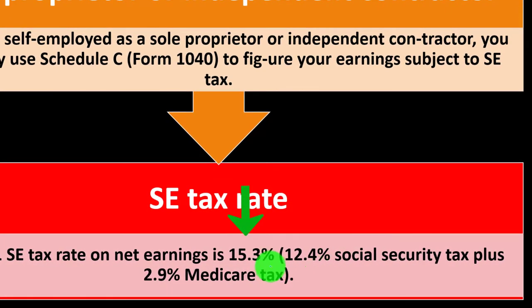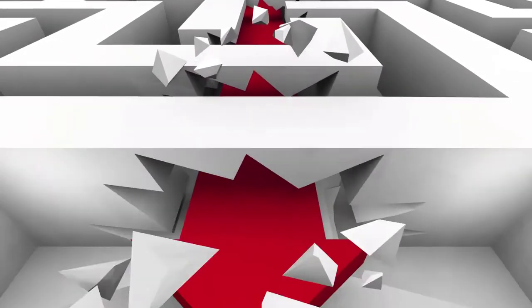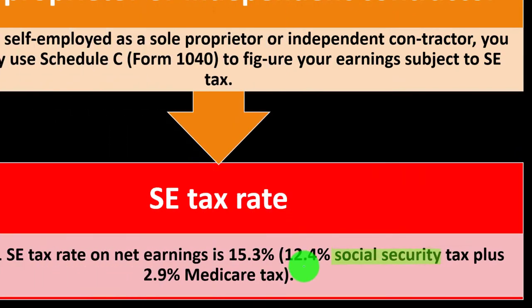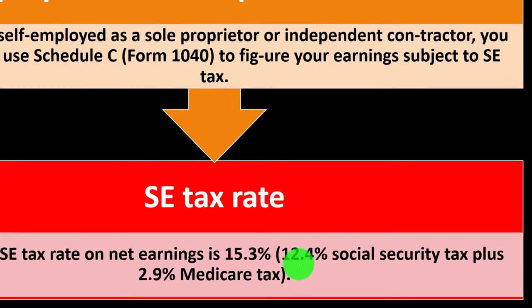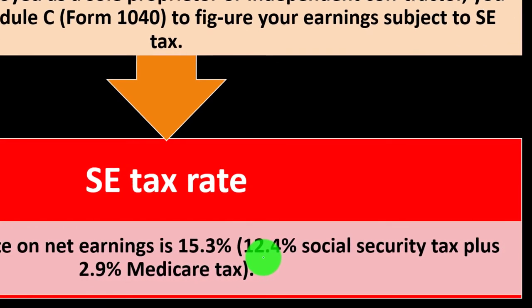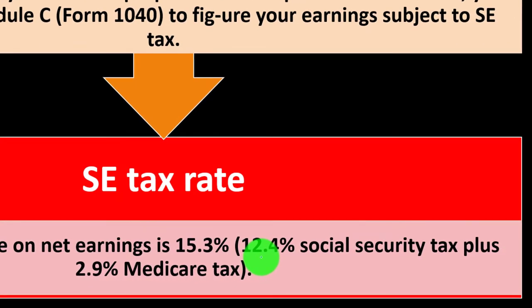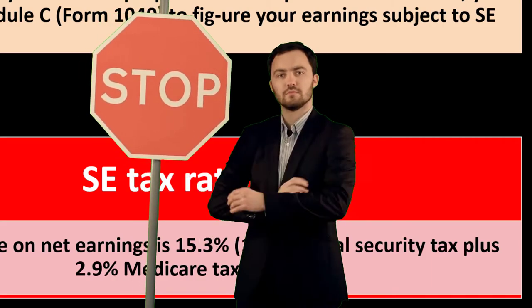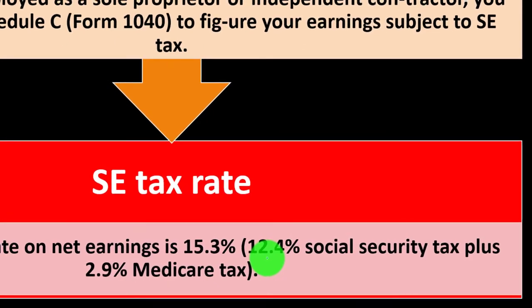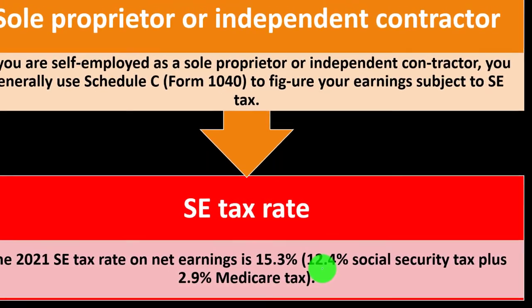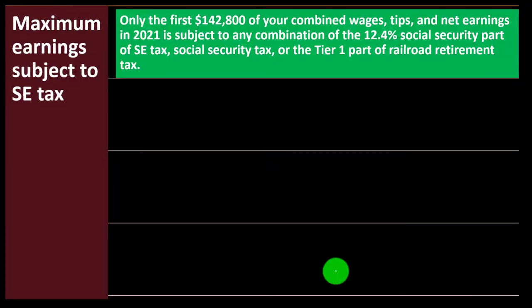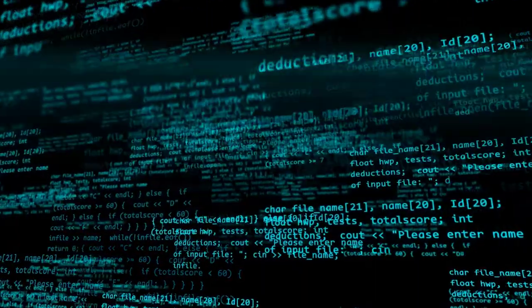That 15.3% rate — you have to be careful using it as one number because you need to break it out between the 12.4% Social Security and the 2.9% Medicare. Social Security has a cap on it — if your income goes over a certain cap, it stops. And Medicare may have an additional amount you have to pay over a certain threshold. So it gets a little more confusing — software is obviously helpful.